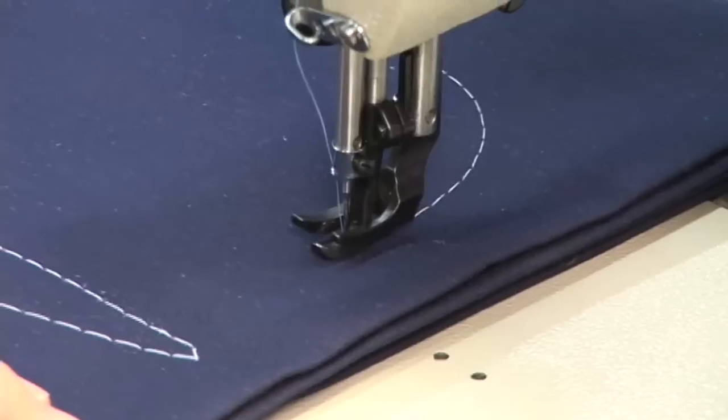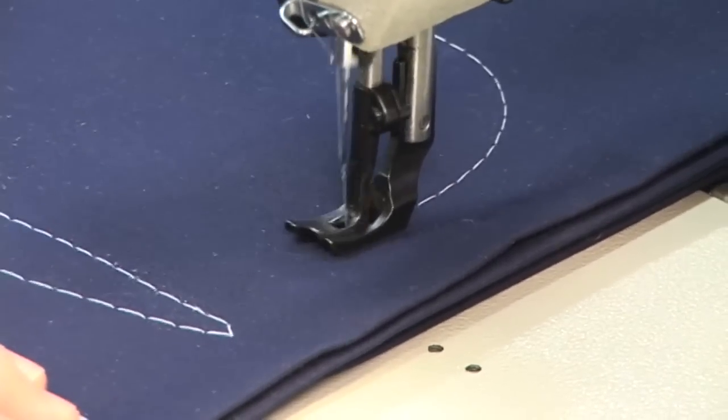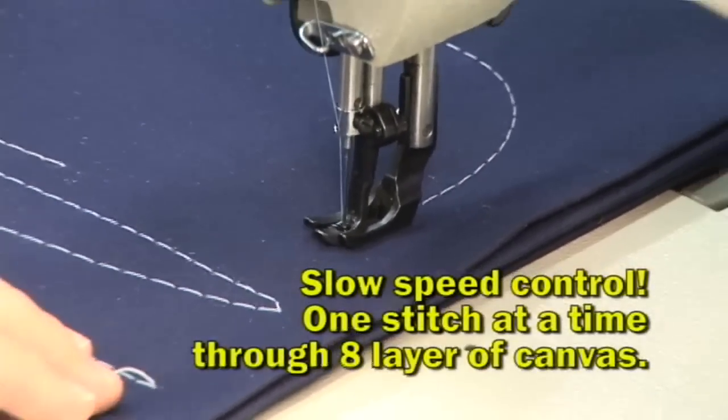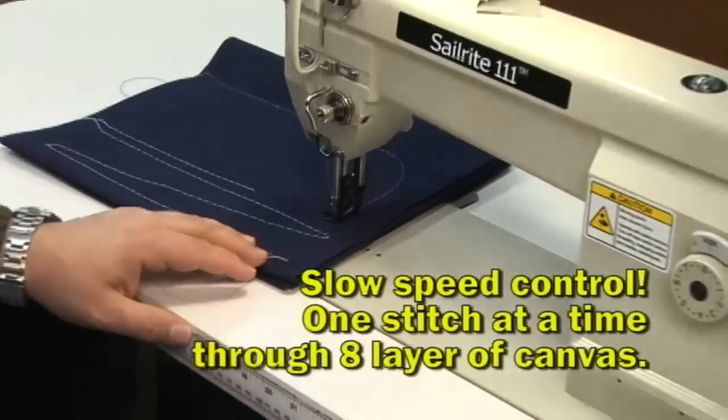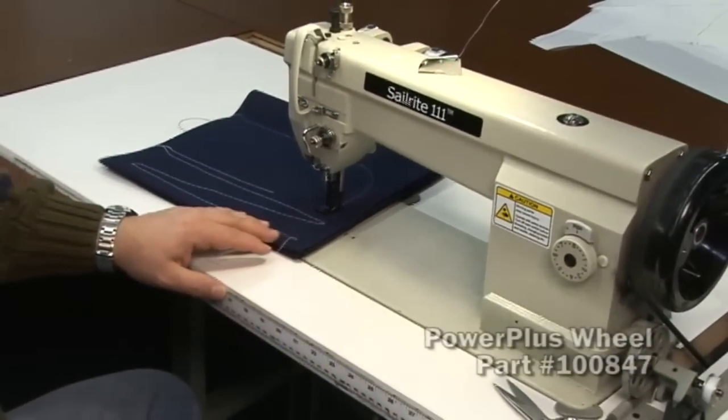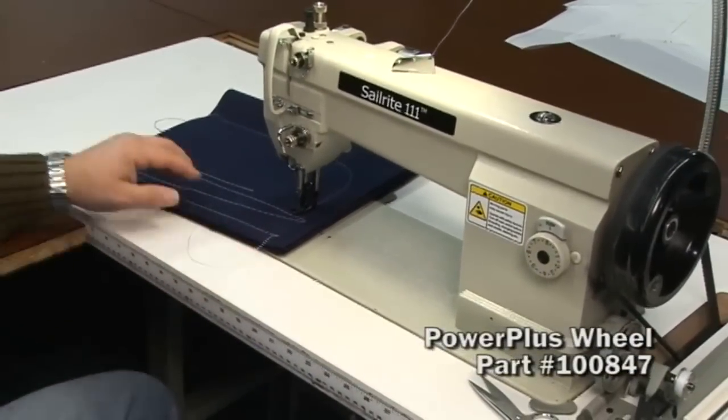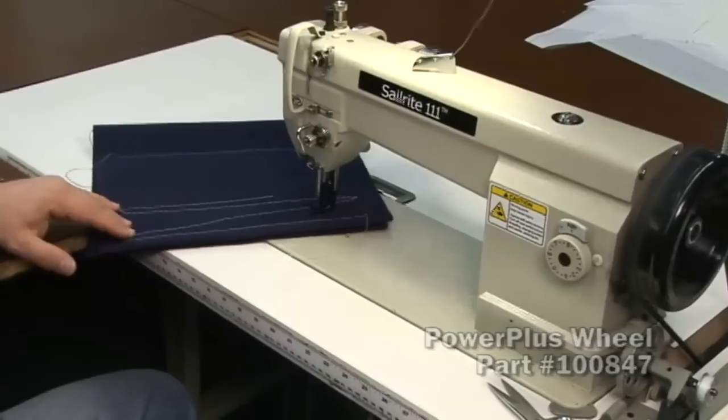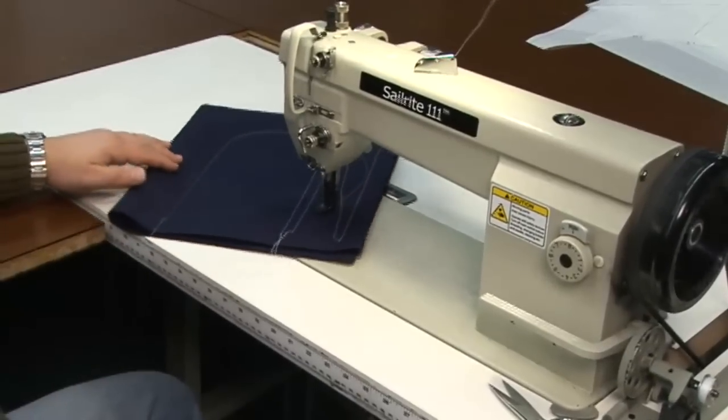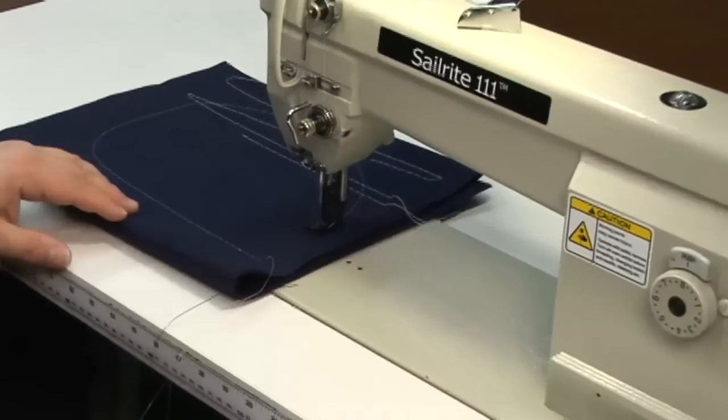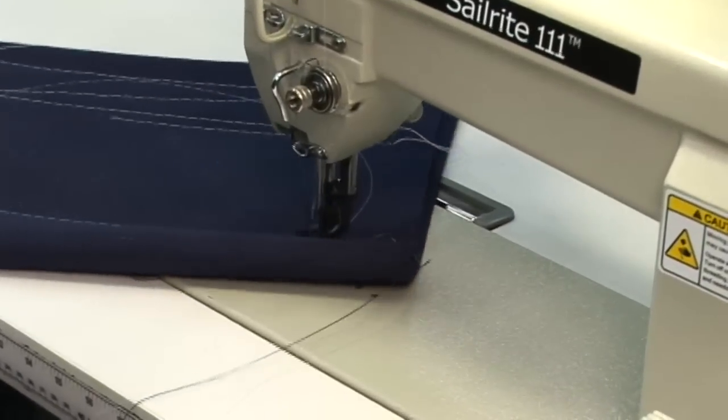If you want to sew one stitch at a time, just push the foot control down slightly. Try doing that on a servo motor. Extreme slow speed. And then if I want to go faster of course, I can ramp it up, but I've got enormous amounts of slow speed control here.